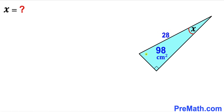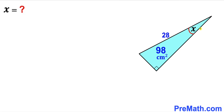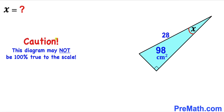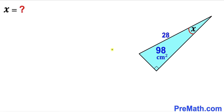In this video we have a blue right triangle whose one of the angles is x, such that the area of this blue triangle is 98 centimeters square and the hypotenuse of this right triangle is 28. Our task is to find the value of angle x. We know our angle is x and one of the side lengths is 28, and we are interested in finding this other side length.